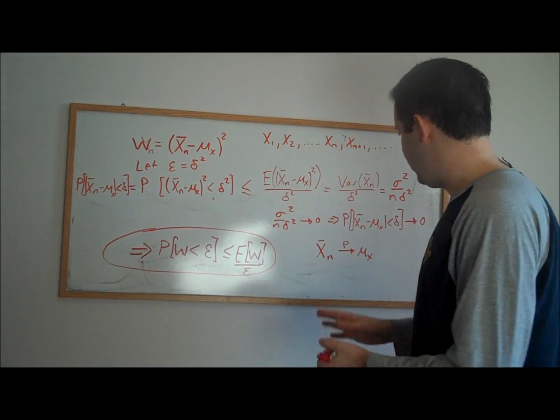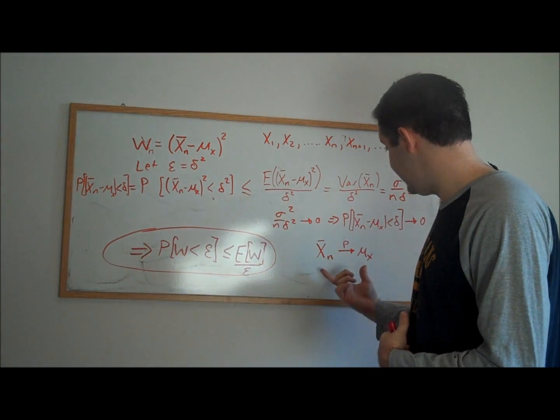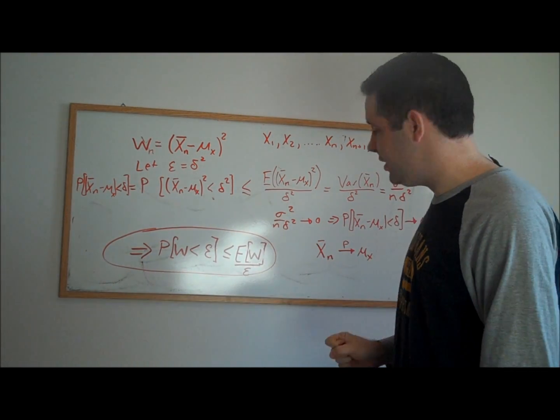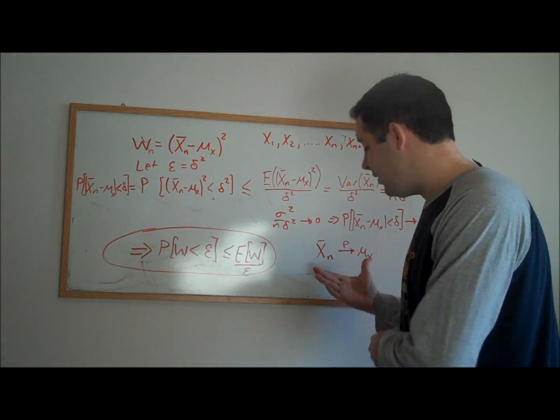And this is what is known as the weak law of large numbers, and it's a really important result because it tells us that the large sample properties of our estimator, x bar, are very good.